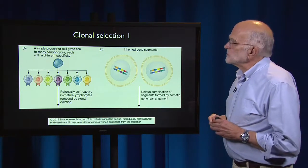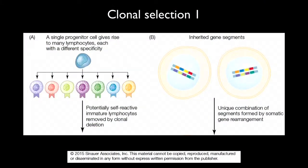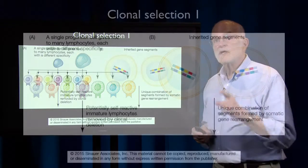Here is the first picture of how clonal selection works. On the left side, we see a single progenitor cell. It gives rise to many lymphocytes. They undergo somatic recombination so that each of them is expressing a different antibody, as you can see from the array of colors on the left-hand side. Somatic recombination is done by shuffling inherited gene segments, which exist as gene families. At each locus there are many alleles present in the population, so every individual is usually heterozygous for many of these loci, and that generates the recombinatory power of first generating a huge amount of diversity and then selecting on it.